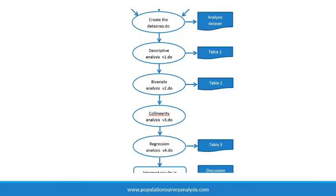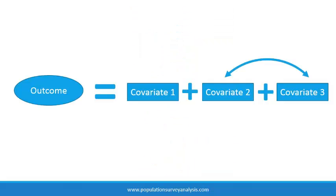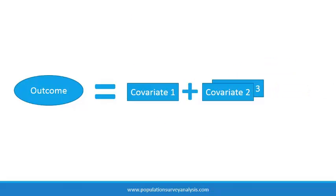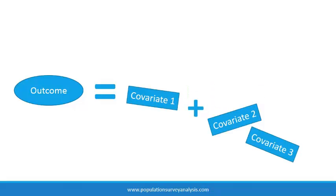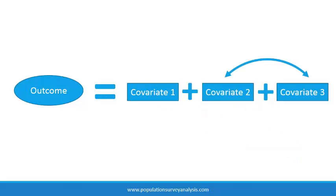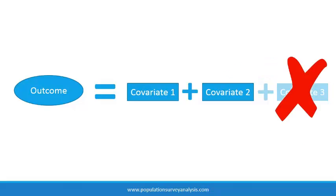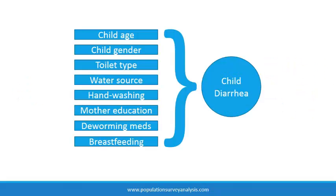Collinearity occurs when two covariates in a multivariable model are highly related — usually because two variables represent the same thing. One variable does a good job explaining variance in the outcome, leaving little leftover variance to be explained by the other covariate, and as a result the model becomes unstable. To produce parsimonious, efficient multivariable models and to prevent strange, unstable results, we test for strong associations among covariates and remove any collinear covariates. By the time we start building a multivariable model, we have narrowed down a list of meaningful covariates that are not collinear.